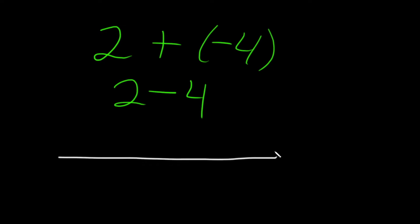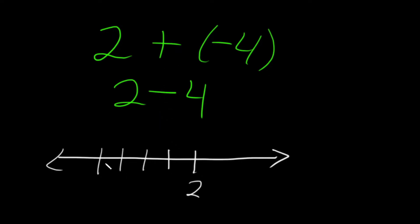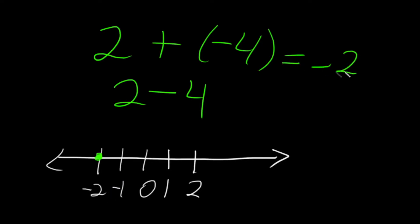Using a number line, if 2 is over here, adding the negative means to go to the left — it's the same as subtraction. So we go 1, 2, 3, 4 to the left, and we end up at negative 2. So the result would be negative 2.